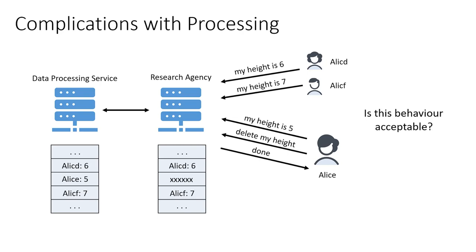Again, it depends on the norms and laws applicable in this specific situation. But I am more interested in what we mean by this behaviour — the fact that Alice's data still exists somewhere else in the world because the agency revealed it to someone else. Can we capture this somehow? Irrespective of whether this is allowed or not, we need to be precise about what we mean. Is there some precisely stated property that captures such behaviour?